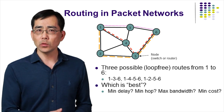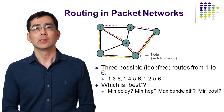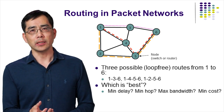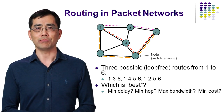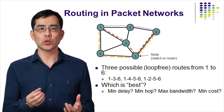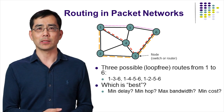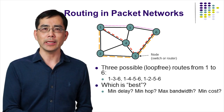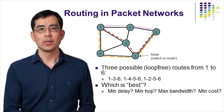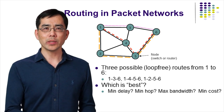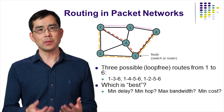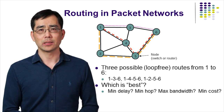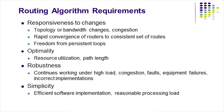Which path is the best one? The optimality depends on the objective function that the network tries to optimize. For example, minimum delay, minimum number of hops, maximum bandwidth, and minimum cost. Please note that a node here is actually a router.